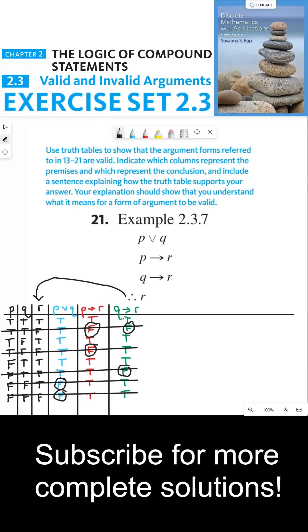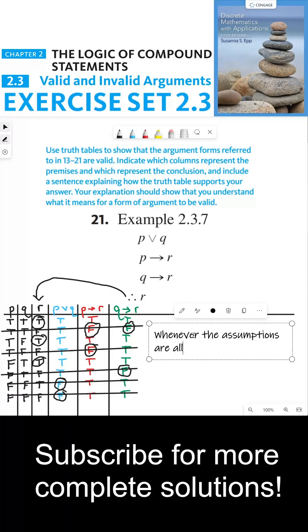So my assumptions are all true. So now we have to check for each of these instances, is it true that R is true? And the answer is yes. For each of these rows, R is true. So we would say whenever the assumptions are all true, the conclusion is also true.